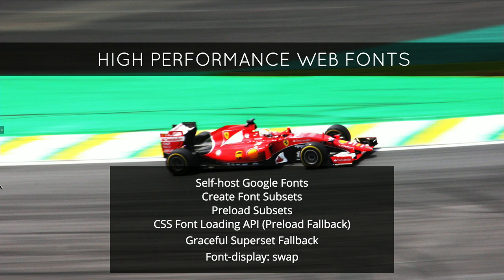Here's the full list of things you can do to optimize font loading: self-host your Google Font, create font subsets to reduce payload, preload those subsets with a polyfill for wider support, use graceful superset fallback to ensure you're not missing glyphs in final rendering, and use font-display swap. Anytime I look at a list like this as a lazy tooling developer, I think I don't want to do this — at least not every time. The aggressive subsetting is something you potentially need to redo anytime the content of your page changes. That's very error prone.